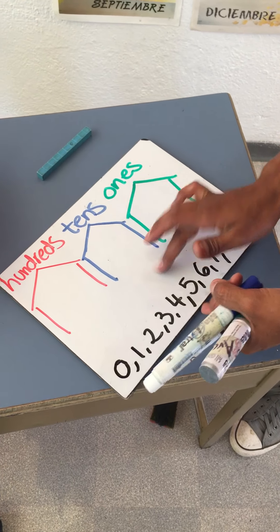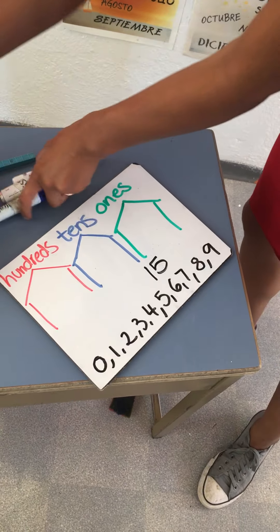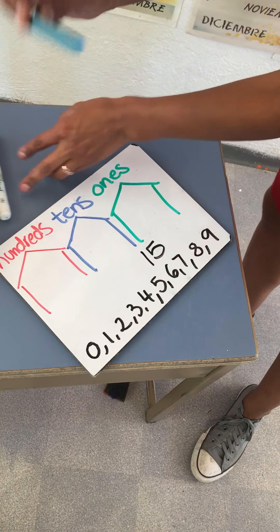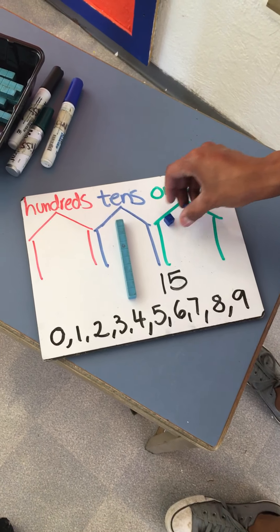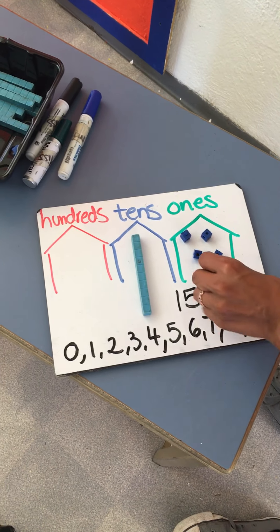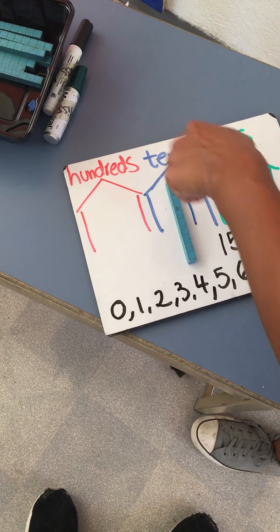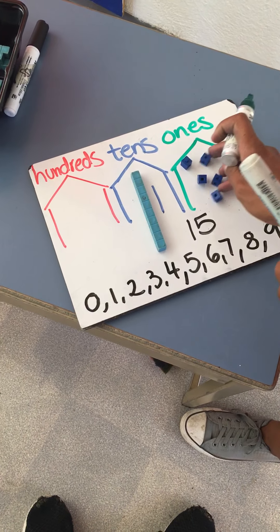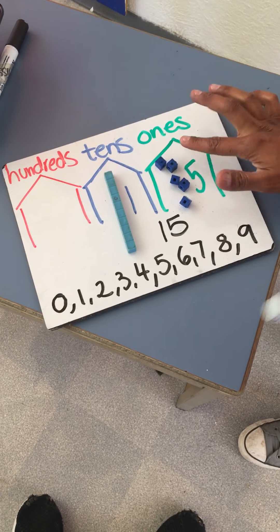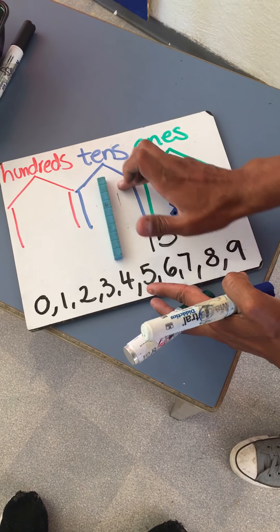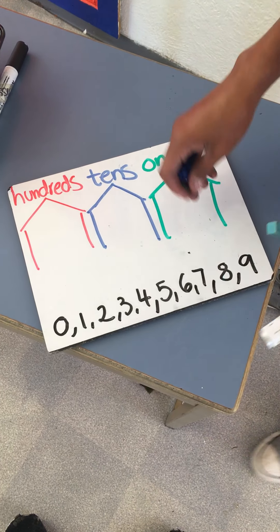So it's as easy as splitting a number. What happens if we have the number fifteen? That means we have one block of ten and one, two, three, four, five ones. So we're gonna have one in tens and five in ones. Remember, only one digit per house. That is our rule.